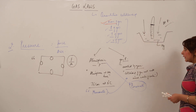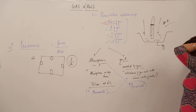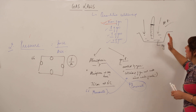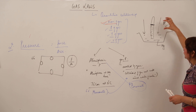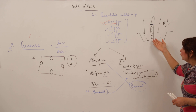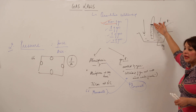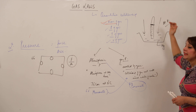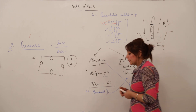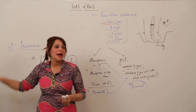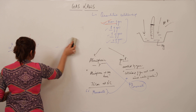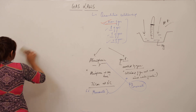So the barometer is a trough of mercury with an inverted tube placed on it. When atmospheric gases exert pressure, they push the mercury up in the tube, and the level to which the mercury moves indicates the atmospheric pressure. Now coming to the manometer and how we use it to calculate gas pressure.